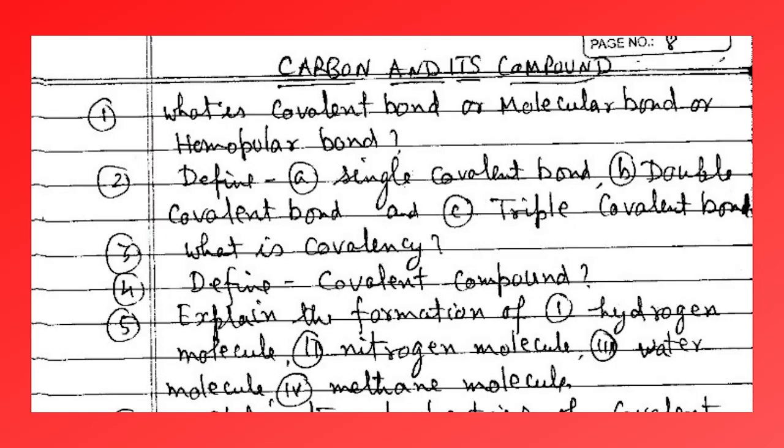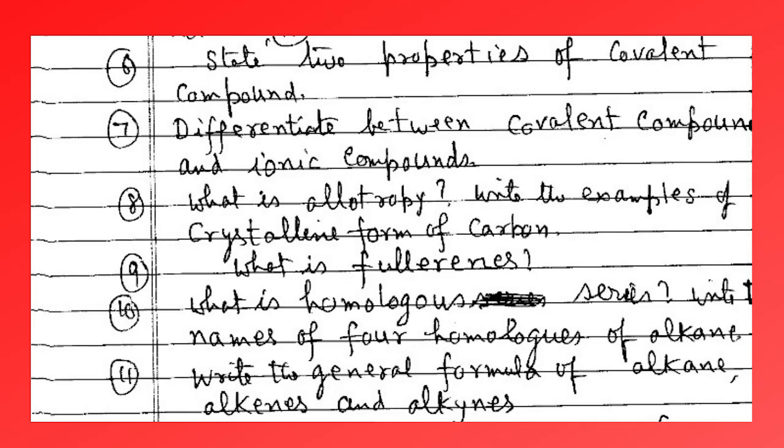The next chapter is carbon compounds. What is a covalent bond, also known as molecular bond or homopolar bond? Define single covalent bond, double covalent bond, and triple covalent bond. What is covalency? Define covalent compound. Explain the formation of the hydrogen molecule and nitrogen molecule. State two properties of covalent compounds. Differentiate between covalent compounds and ionic compounds. Write examples of the crystalline forms of carbon — allotropy.